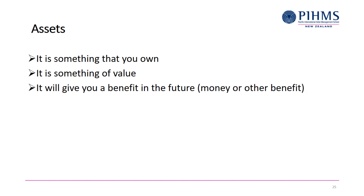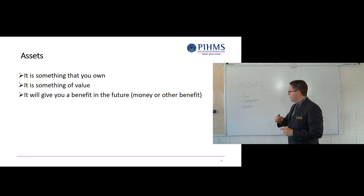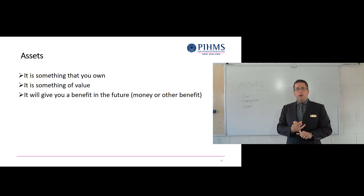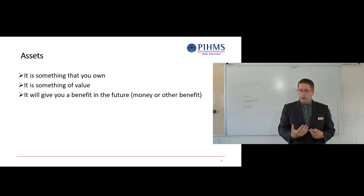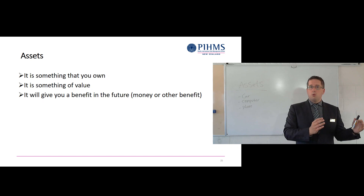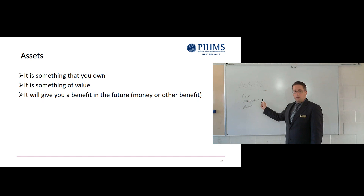That benefit could be in money terms or another form. Take a car: you own it, it's in your name, you control it, you have the keys. It has value — if you sell it you get dollars. And it gives you a benefit in the future: it gets you from point A to point B, making life easier. Likewise with a computer — you own it, it has value, and it gives you the benefit of accessing the internet and doing your studies.